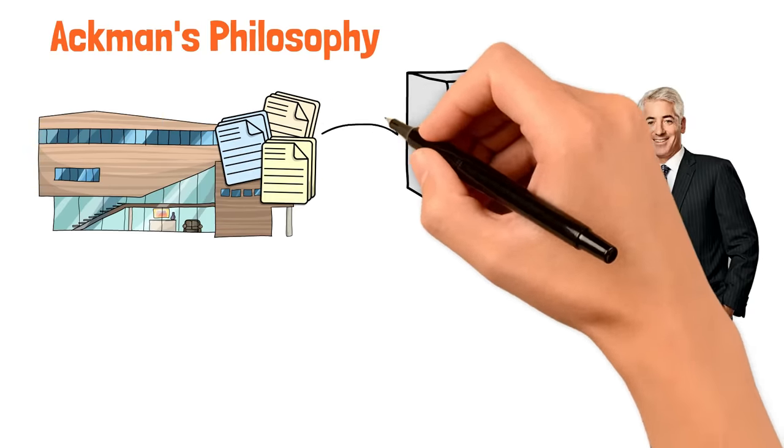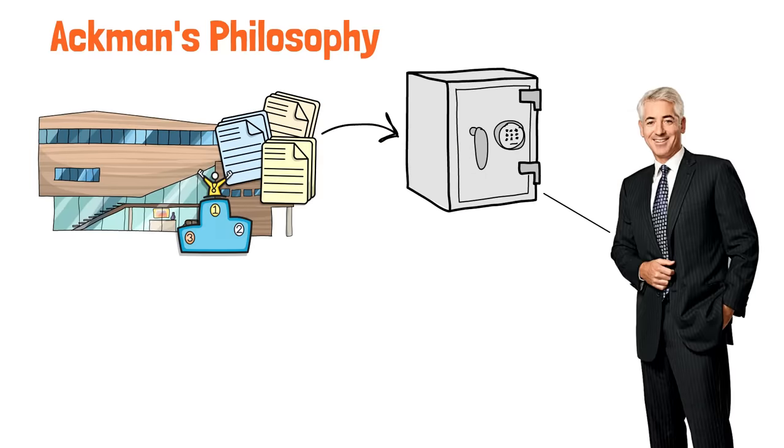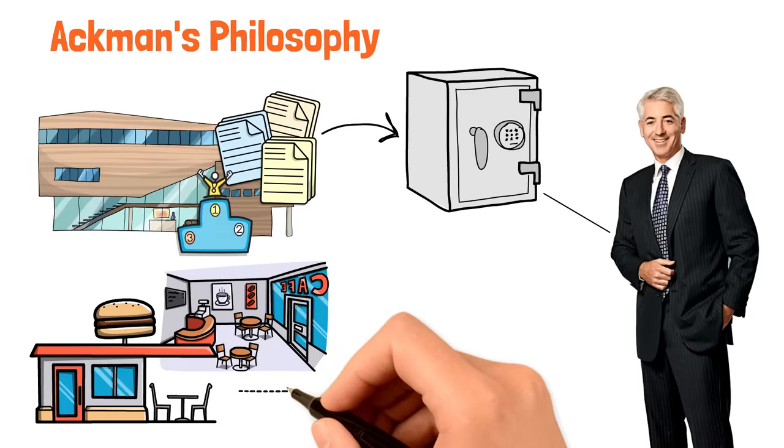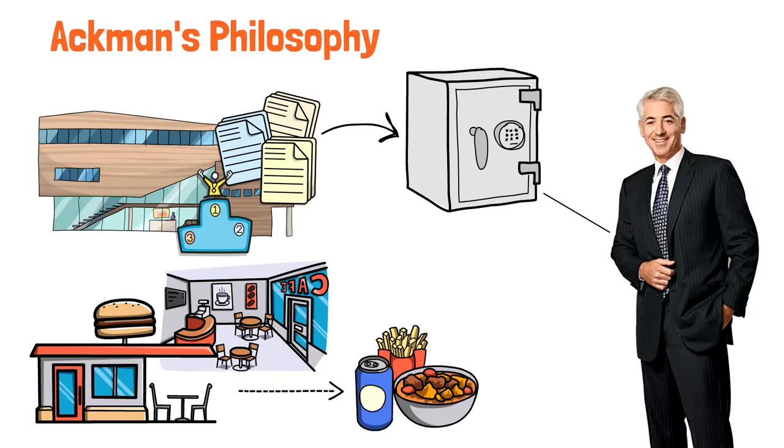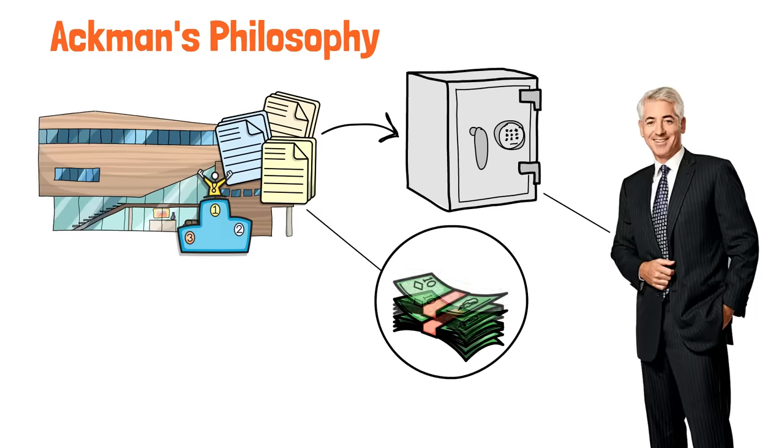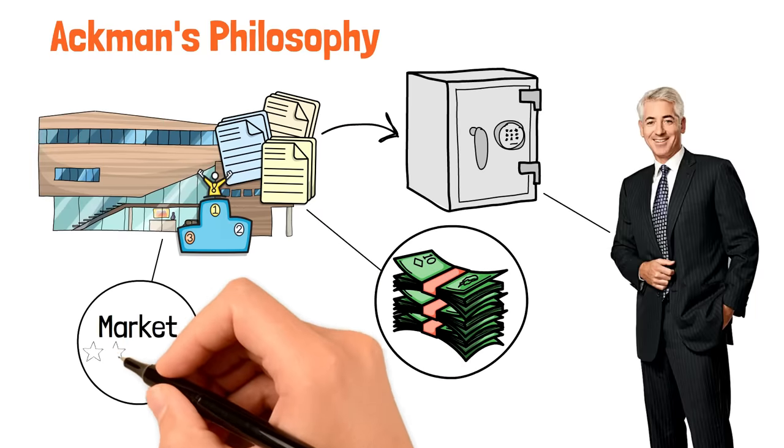He looks for companies that are at the top of their game. Ones that are not just playing in the league, but dominating it. Think about a company that's like your go-to restaurant because you know you'll get a good meal every time. That's what Ackman is after in the stock world. He wants companies that can be counted on, keep making money without any problems, and have a stronghold on their market.